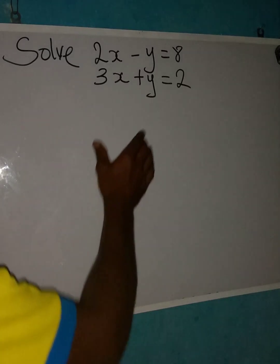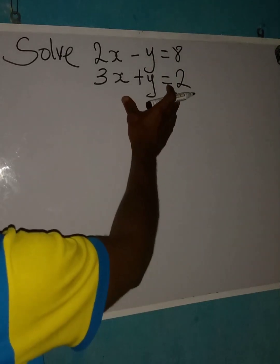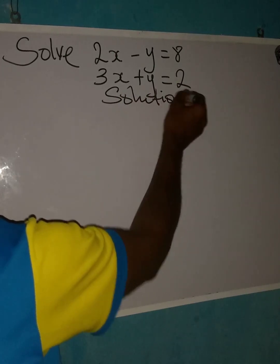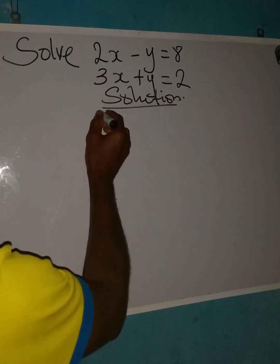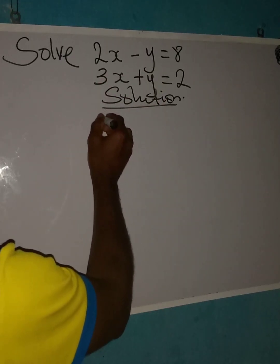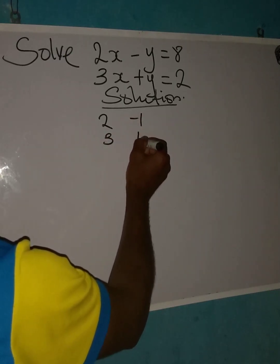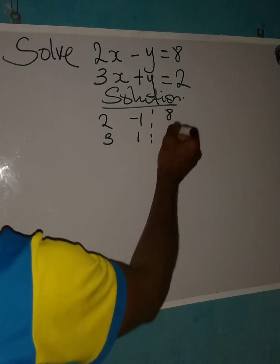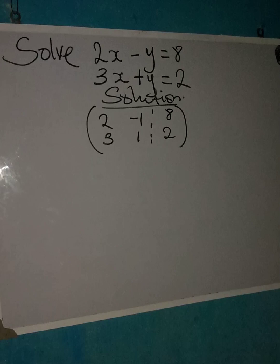Hello everyone, let us solve this simultaneous equation using the determinant method. We will first write this in matrix form, so this is going to be 2, 3, minus 1, 1, and then we have 8 and 2 on that side. This is now in matrix form.